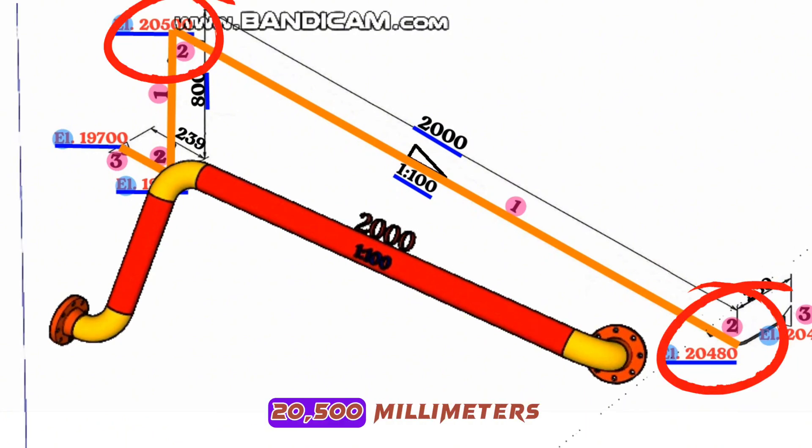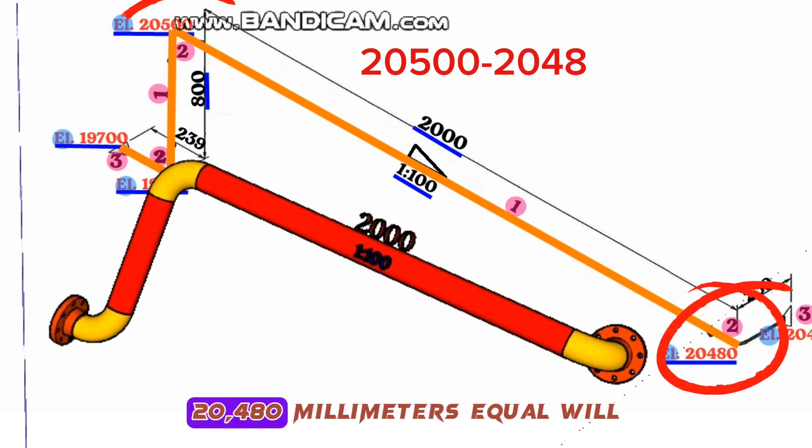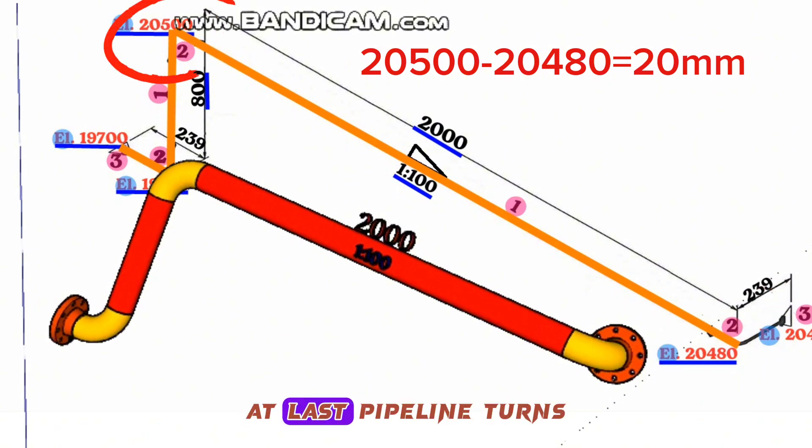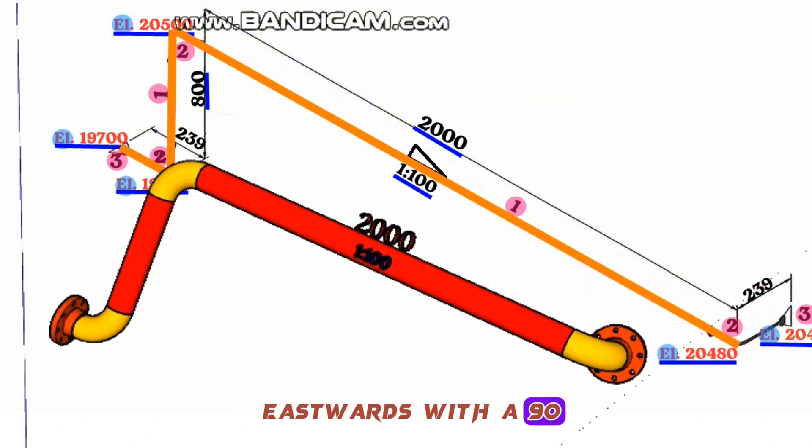Where the initial height 20,500 millimeters minus the second height 20,480 millimeters equals 20 millimeters. At last, the pipeline turns eastwards with a 90 degree elbow and continues with same elevation.